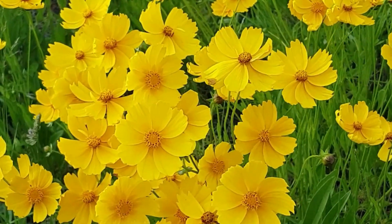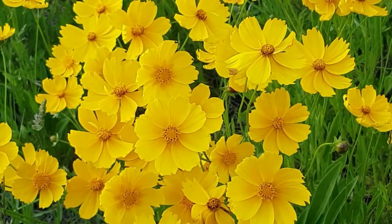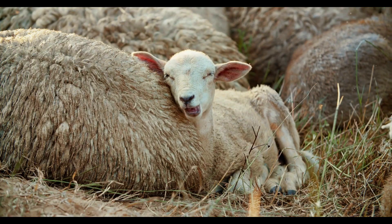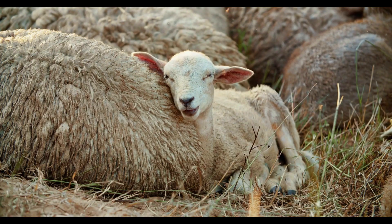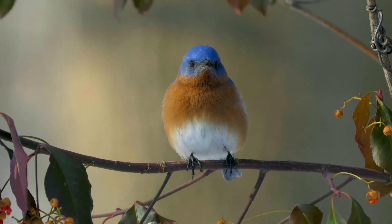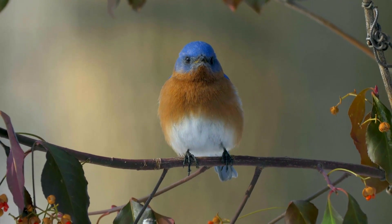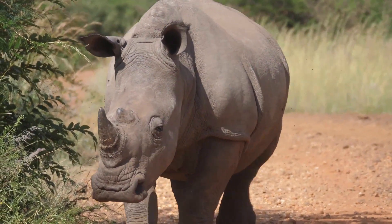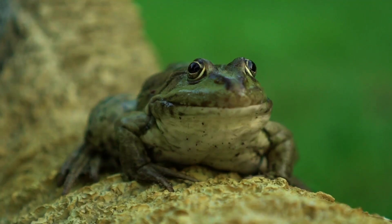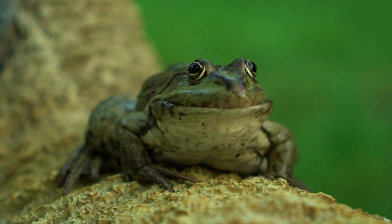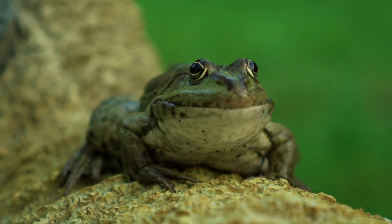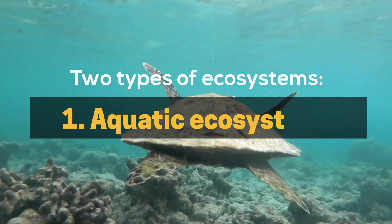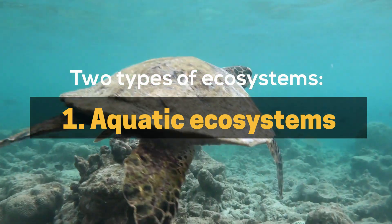Functional habitats are part of ecosystems that are of great importance for local species. An ecosystem is a geographic area where plants, animals, and other organisms, as well as weather and landscape, work together to form a bubble of life. There are two types of ecosystems, each with its own traits.